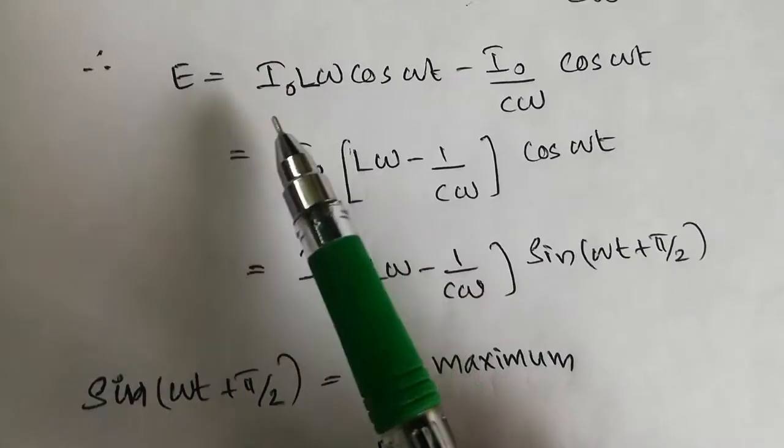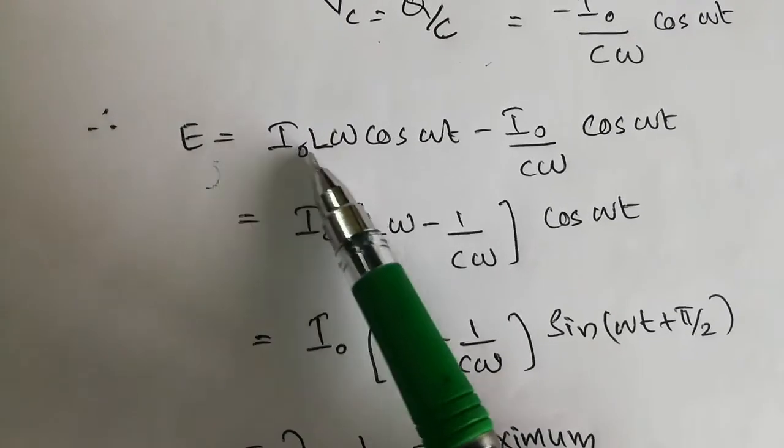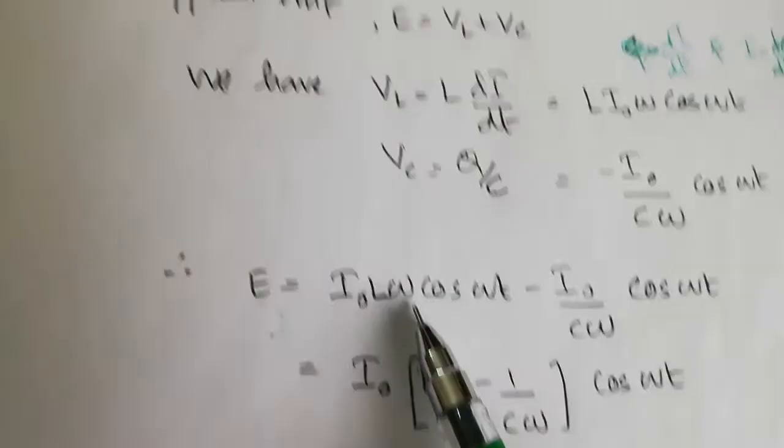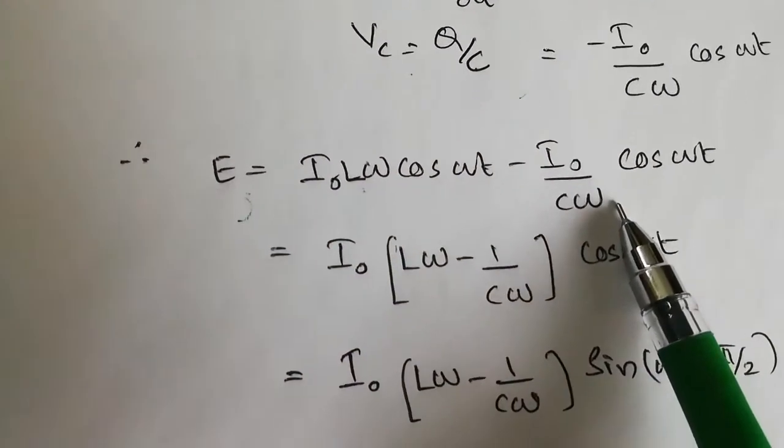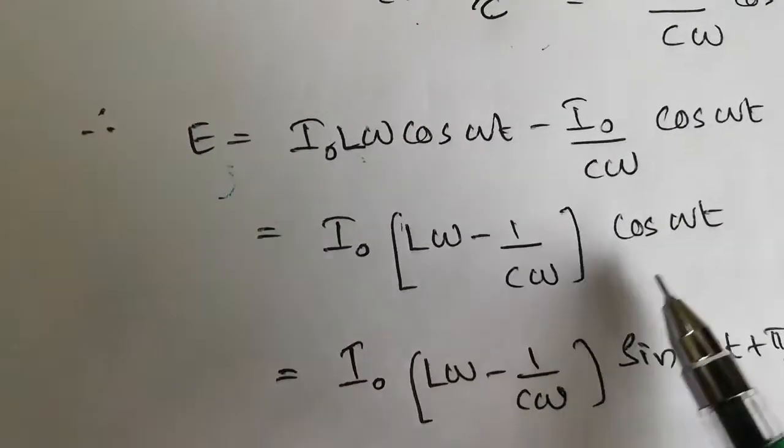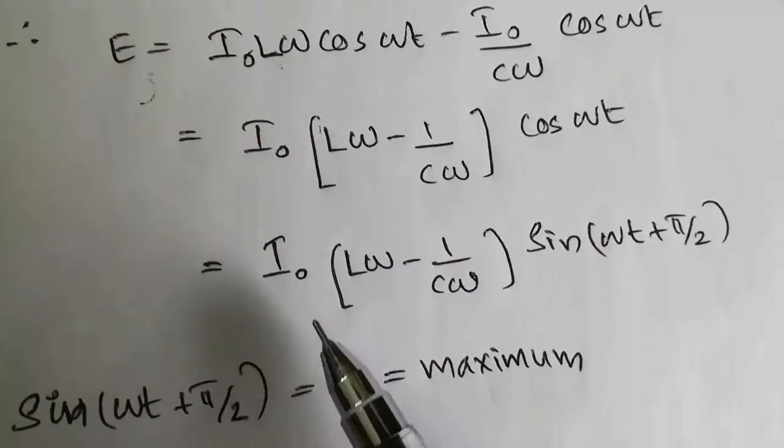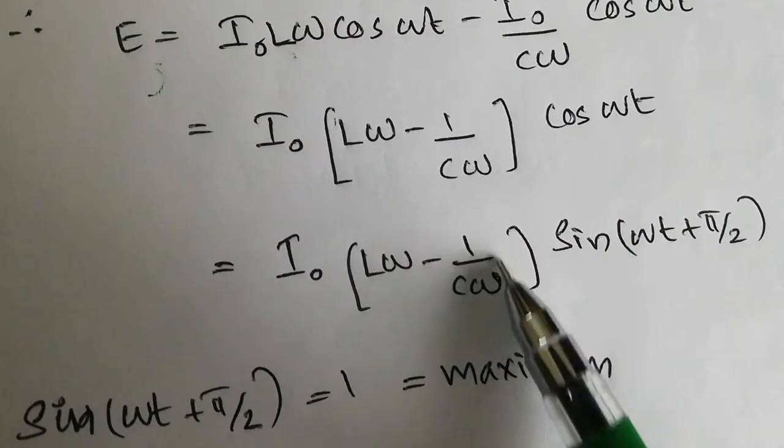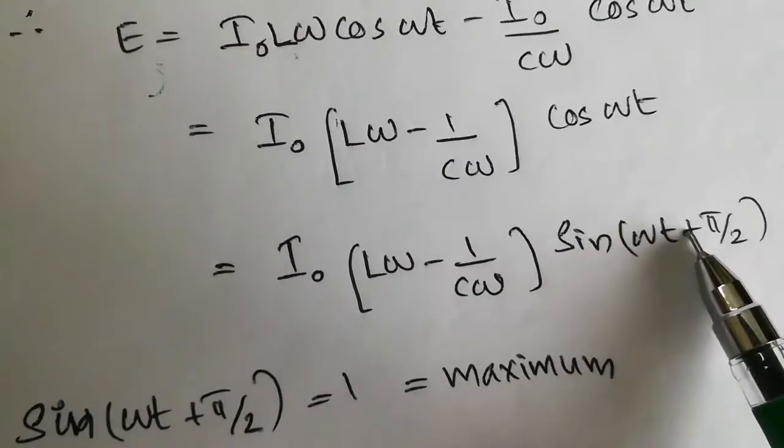So we know the net EMF equals VL plus VC. Substituting VL and VC here and taking outside, I0 times L omega minus 1 by C omega cos omega t. That is equal to I0 times L omega minus 1 by C omega sin omega t plus pi by 2.